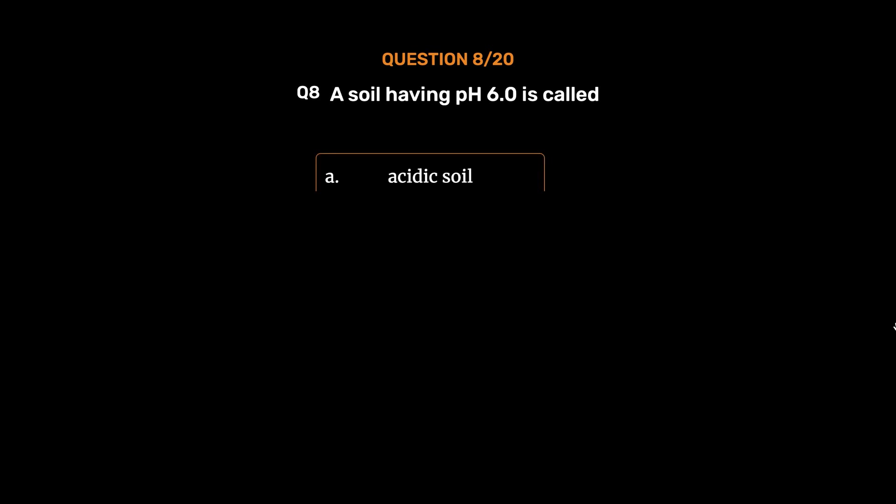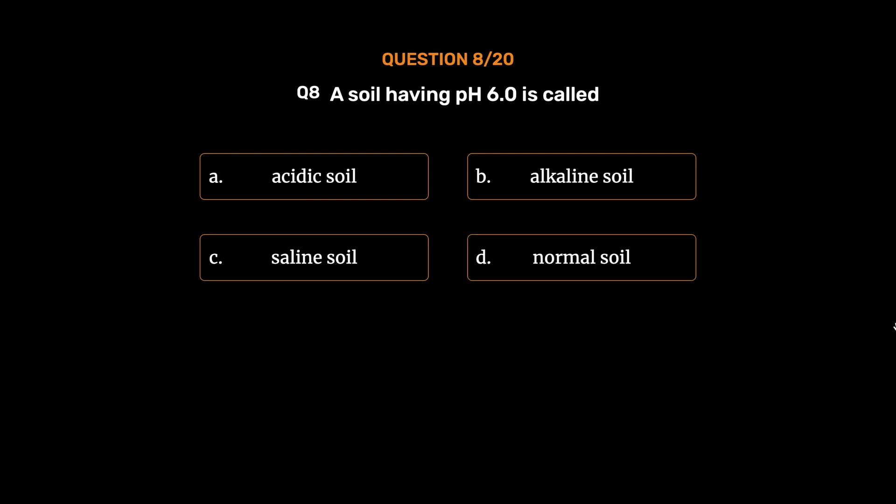Question number 8. A soil having pH 6.0 is called: option A, Acidic soil; option B, Alkaline soil; option C, Saline soil; option D, Normal soil. The correct answer is option A, Acidic soil.